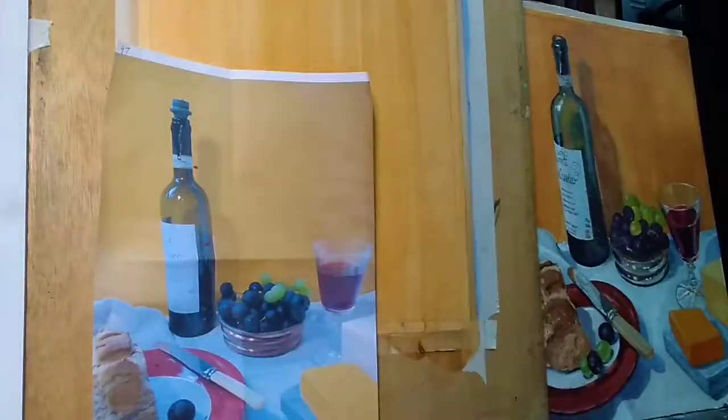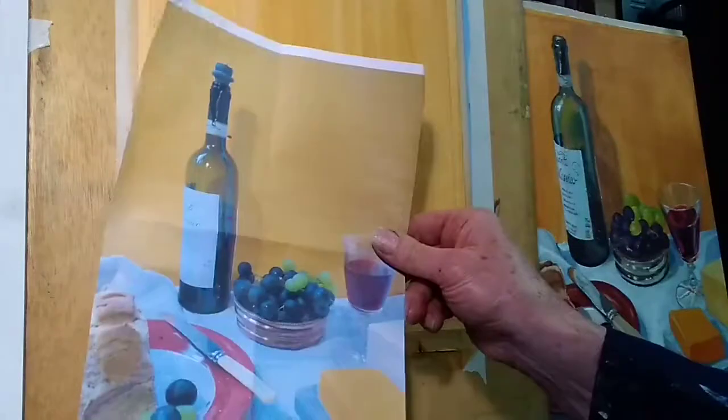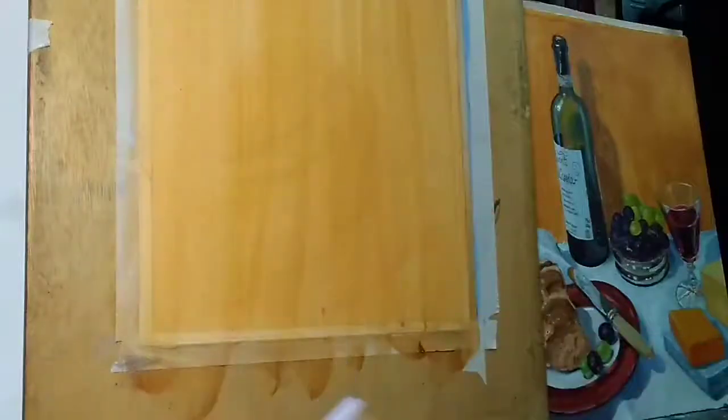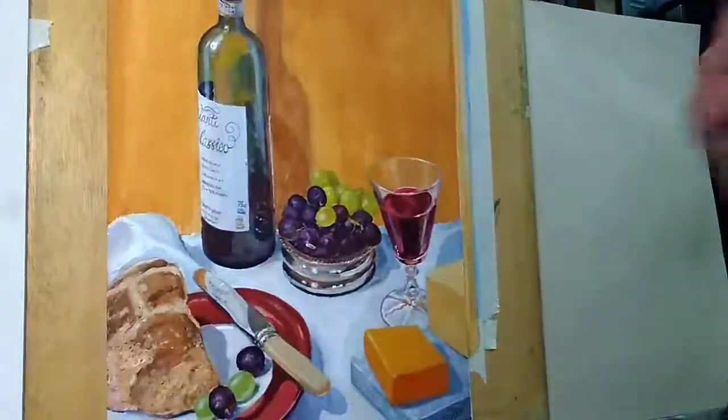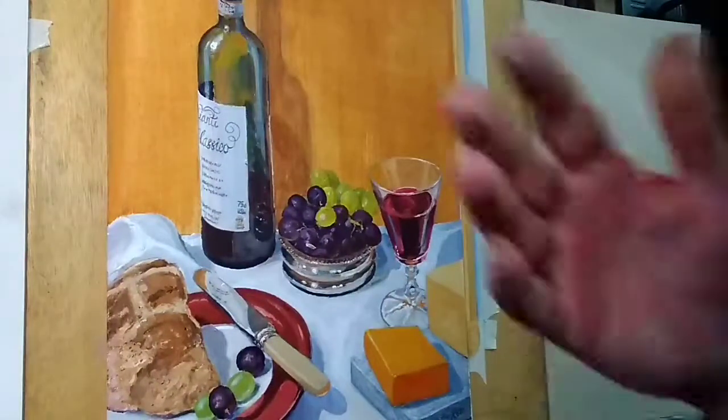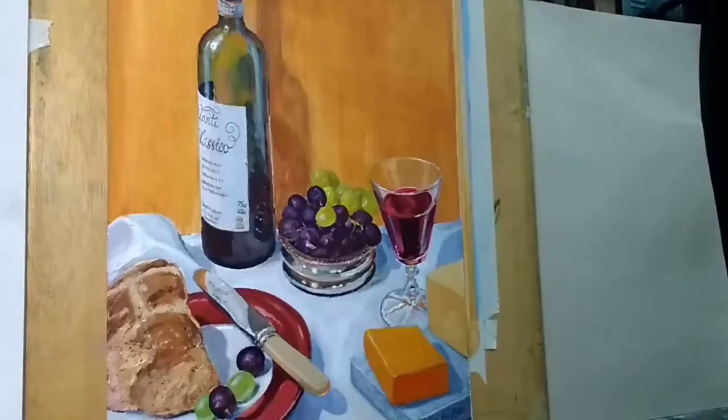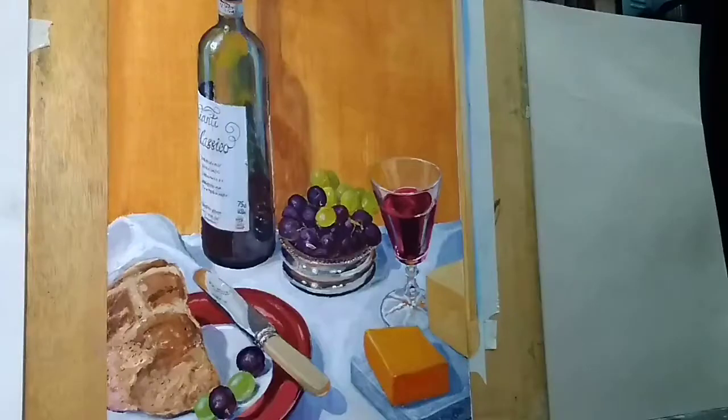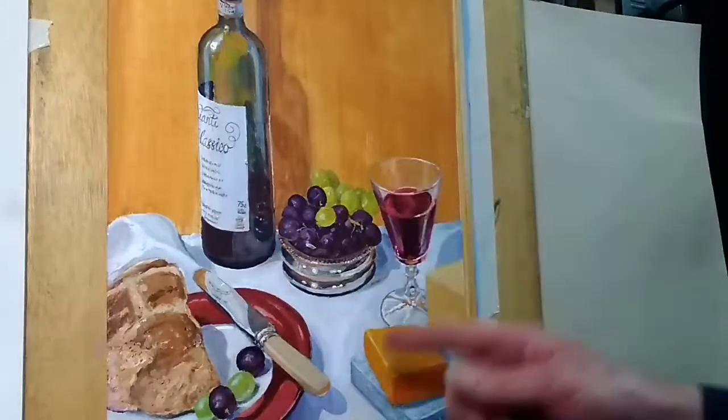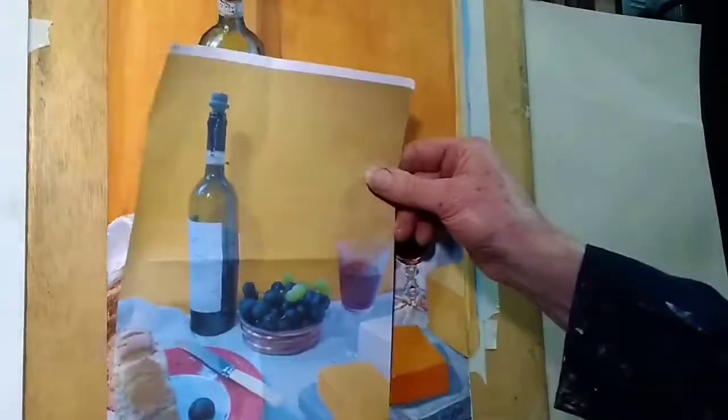In this project I'm trying to find another way to interpret this still life subject which was painted in the previous project. Here's the painting and one method of searching for the abstract is to zoom in on parts of what you've done already in the painting and amplify aspects of it.